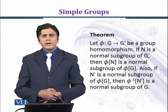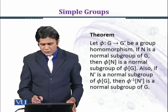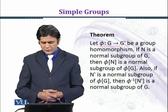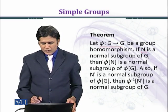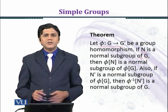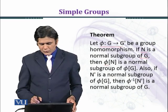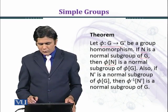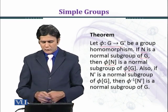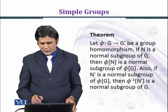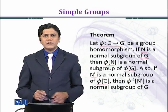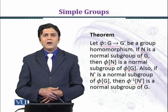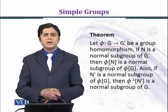Now we state the theorem. Let phi from G to G prime be a group homomorphism. If N is a normal subgroup of G, then the image of N under phi is a normal subgroup of phi(G). Also, if N prime is a normal subgroup of phi(G), then the pre-image of N prime is a normal subgroup of G.